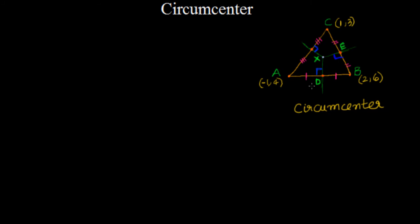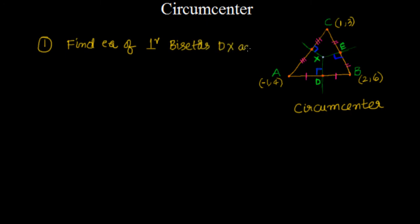Our approach to resolve this problem will be: first, find the equation of perpendicular bisectors DX and XE — you can take any two of the three. Since all three bisectors are concurrent at X, finding any two is sufficient. Then we will solve those two equations for X.